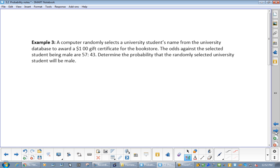So, a computer randomly selects a university student's name from a university database to award a $100 gift certificate for the bookstore. The odds against the selected student being male are 57 to 43. So, this would be what I would say, I could say, would be right on the diploma. And they might just ask for it in decimal, the probability, and you would just write that into your numerical response.